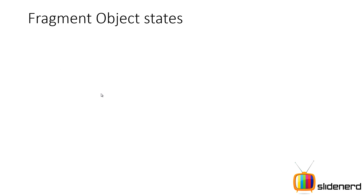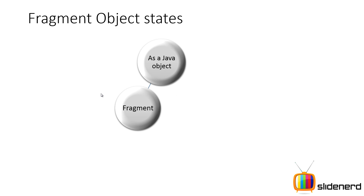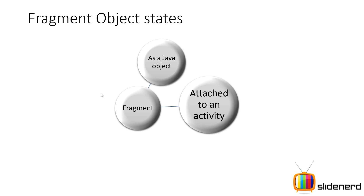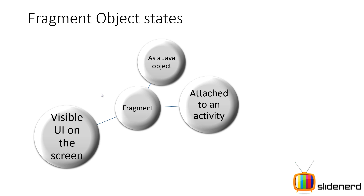The fragment object is not as simple as saying fragment F equals new fragment — it exists in different states. First, it exists as a Java object when you instantiate it, but at that point it has not been linked with the activity. Once you attach the fragment to an activity, it exists as a Java object plus attached to an activity, though it may or may not be visible to the user. The third state is when it is fully initialized, attached to an activity, and visible to the user on screen.